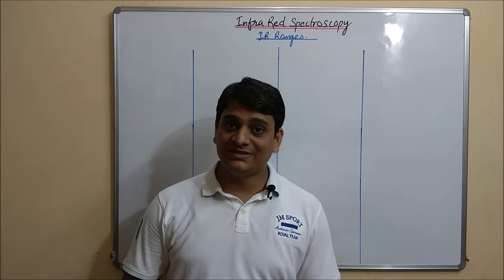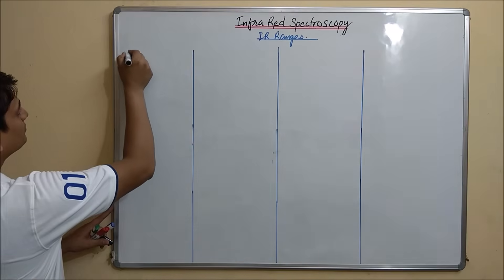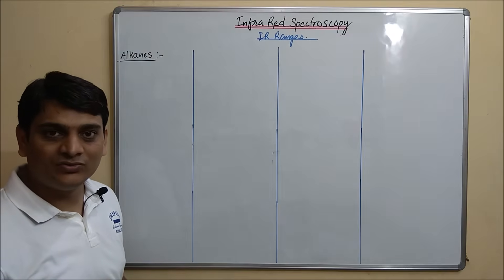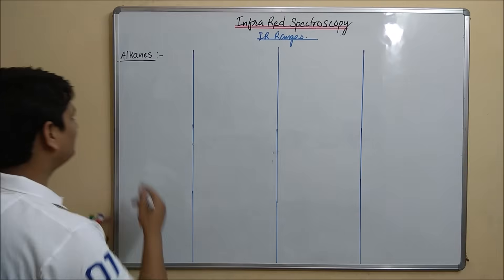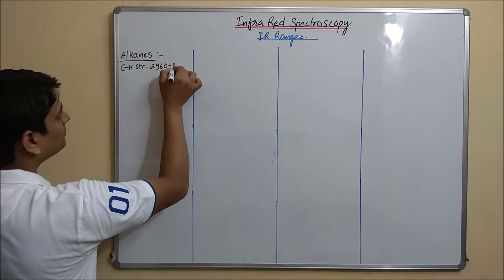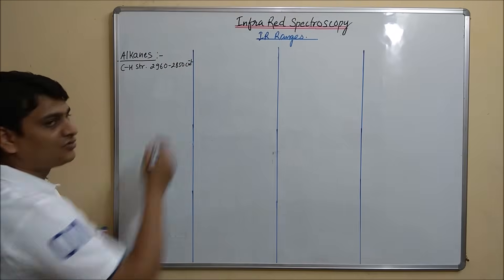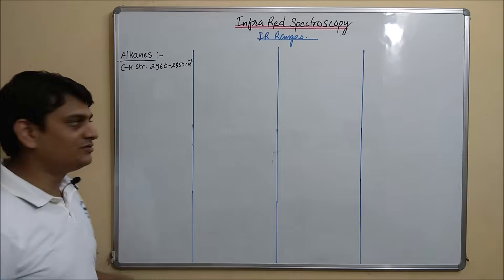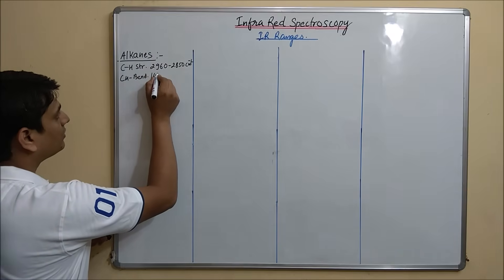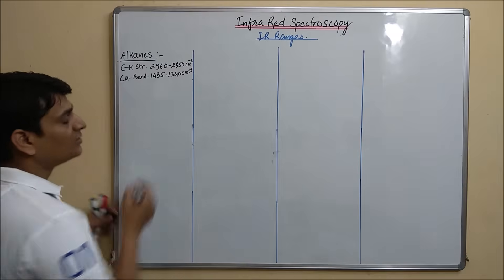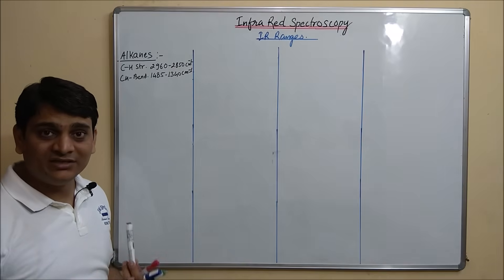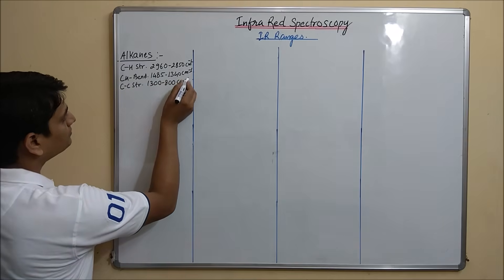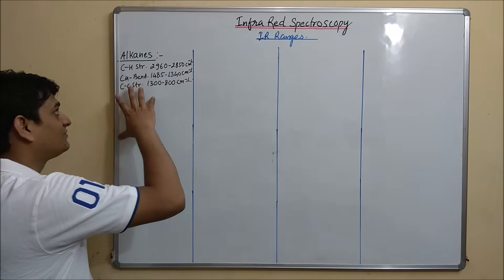Coming to the first one which is Alkanes. For CH stretching it is 2960 to 2850 cm inverse. For CH bending it is 1485 to 1340. For CC stretching it is 1300 to 800 cm inverse. So these are the IR ranges for Alkanes.